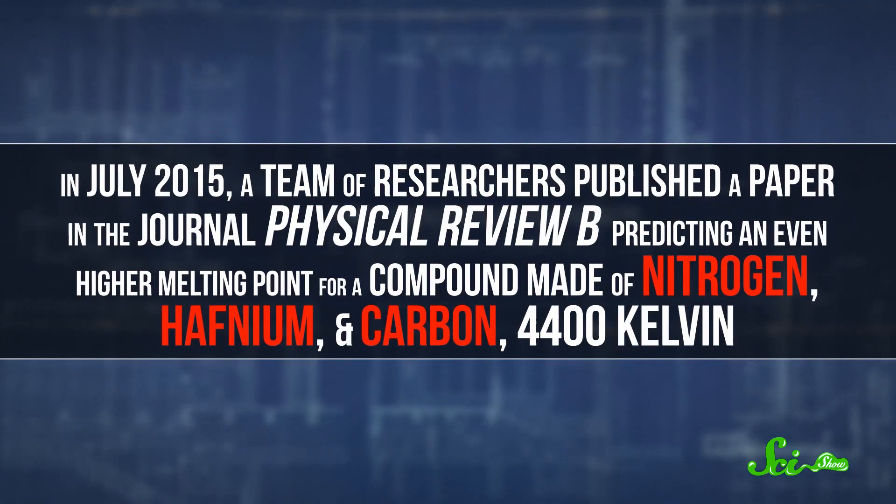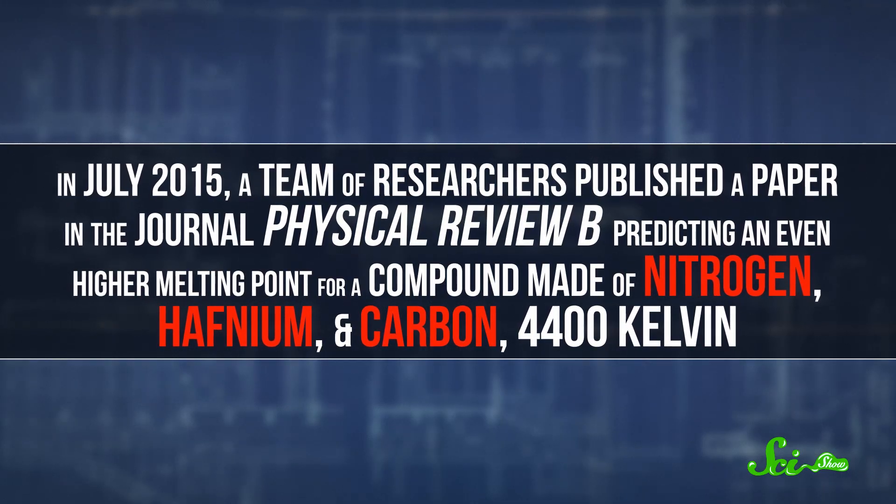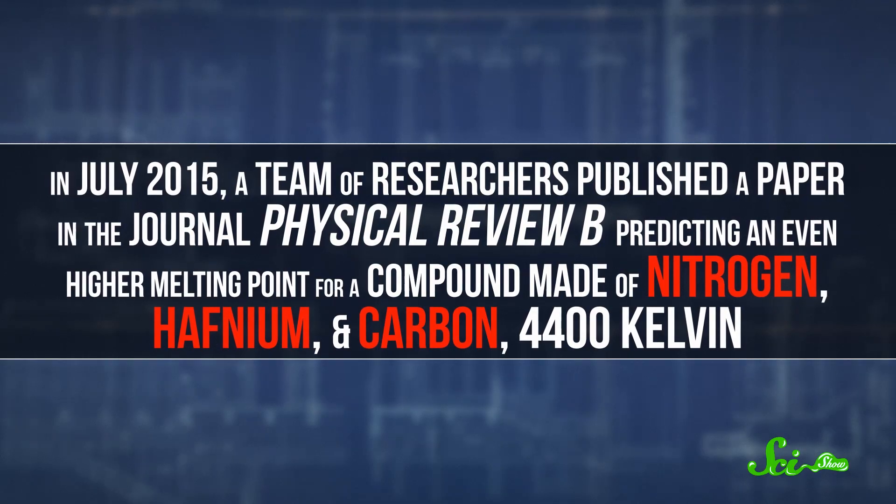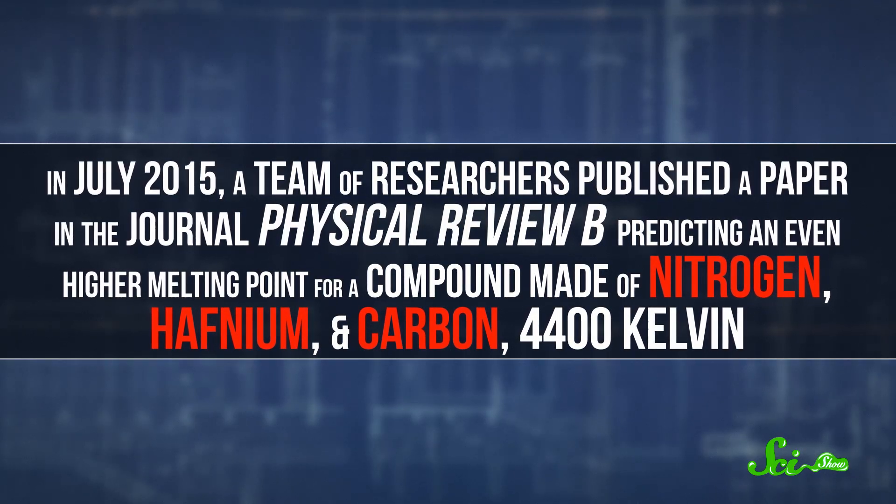But in July 2015, a team of researchers published a paper in the journal Physical Review B, predicting an even higher melting point for a compound made of nitrogen, hafnium, and carbon, 4,400 Kelvin. The authors found this by simulating how molecules attract one another, and just trying a bunch of different compounds until they found the one that would melt at the highest temperature. It's much easier to do that sort of thing in a computer than in the real world, where you have to actually make the compounds. And they haven't actually tested their prediction by making the compound yet.